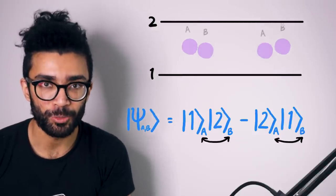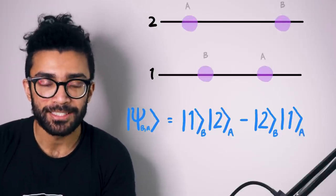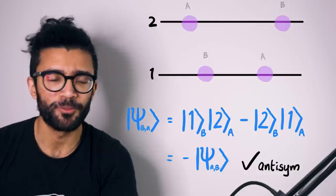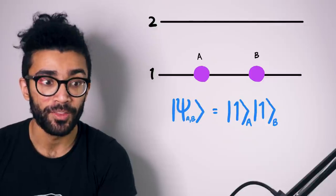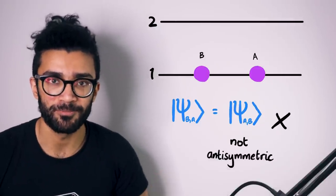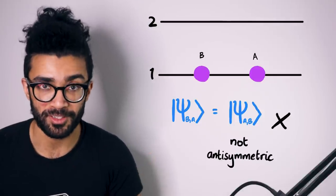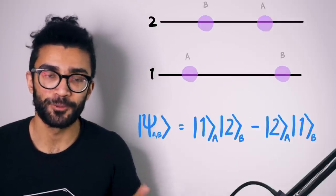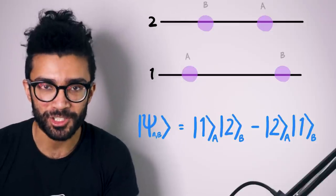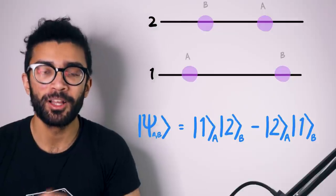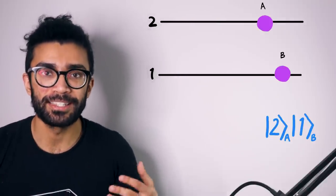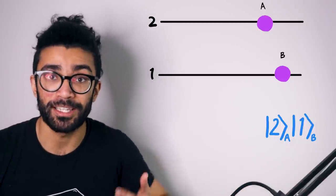If we take this wave function and exchange the two particles — A becomes B and B becomes A — then the wave function is exactly negative of what it was before, which is exactly what we want: an anti-symmetric wave function. Whereas in any other scenario, for example if we were to find both particles in the same energy level, that wave function stays the same under particle exchange. Therefore it's not a fermionic wave function; it's actually a bosonic wave function. So when we make a measurement on the fermionic system, we will either find one electron in each energy level — we will never find both electrons in the same energy level. They can't be there because they're fermions.